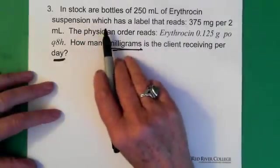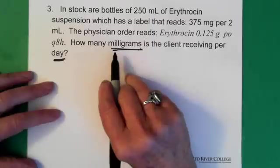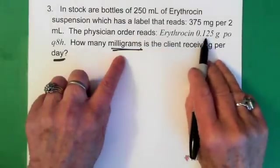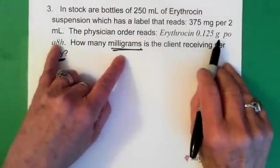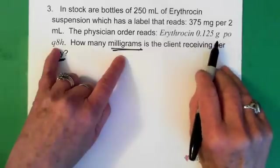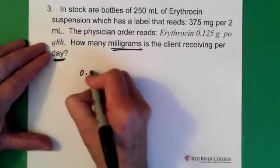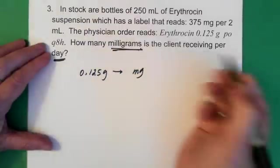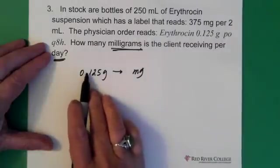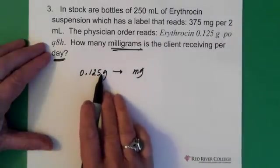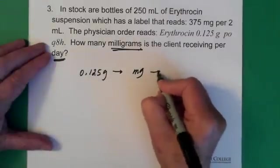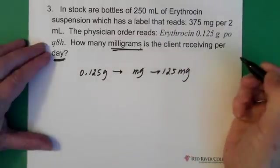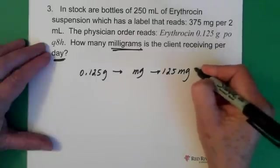So, then we go back and say, how am I going to figure out how many milligrams the patient's receiving or the client's receiving in one day? Well, I'm giving the person 0.125 grams every 8 hours. So, 3 times a day. So, then we take our 0.125 grams and we change it to milligrams. And, we change it to milligrams by moving the decimal 1, 2, 3 places to the right. So, we end up with 125 milligrams every 8 hours.